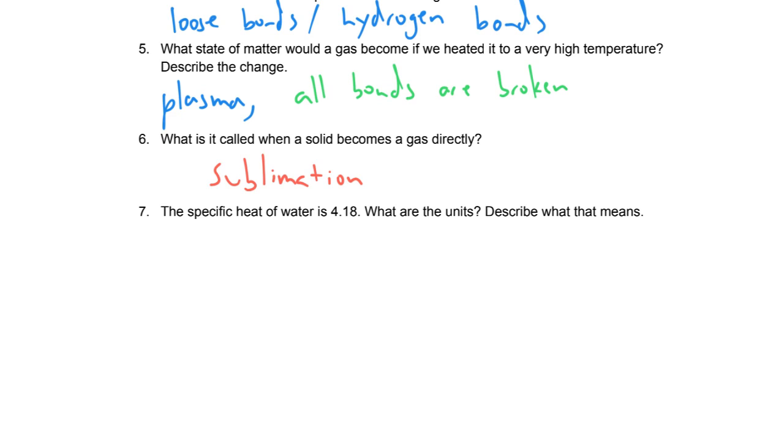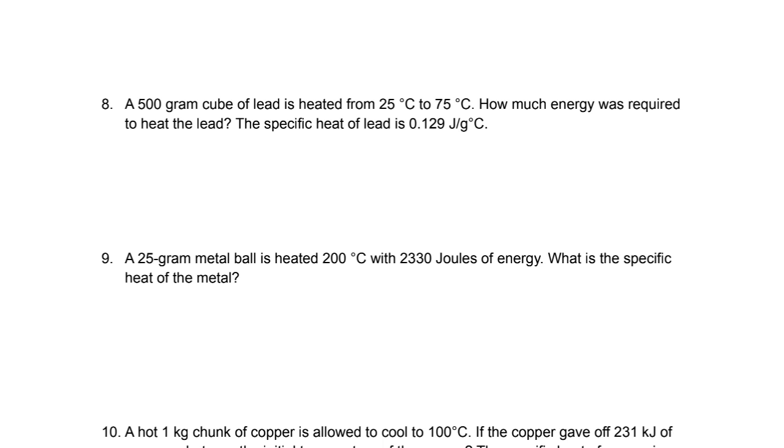The specific heat of water is 4.18. What are the units? Describe what that means. So the units, if it's 4.18, that's going to be joules per gram per degree Celsius. So 4.18 is the number of joules, energy needed that you have to input into water to raise one gram of water, this is our amount, one degree Celsius. So this is our change in temp. So if I put that into a sentence, I would say it takes 4.18 joules of energy to raise one gram of water one degree Celsius. And that's for liquid water.